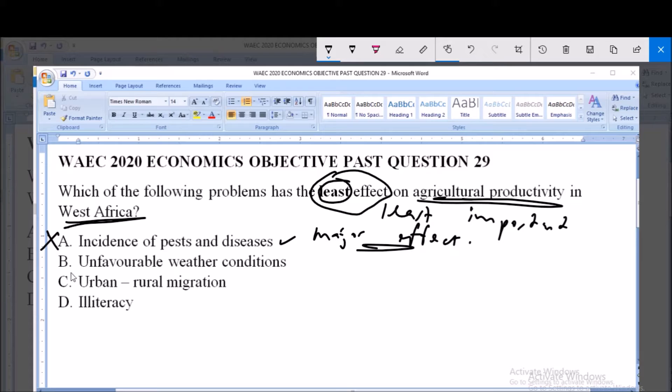Now option B says unfavorable weather conditions. It also has a major effect because unfavorable weather conditions as well as unpredictable climates, especially in rural areas in West Africa, is a problem that majorly affects agricultural productivity in West Africa. So it is not the answer to the question.